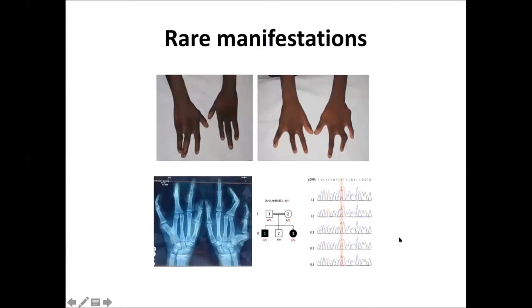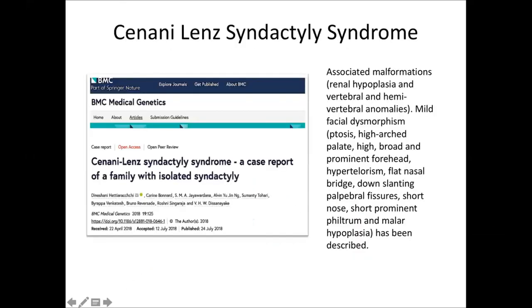Moving on to rare manifestations: this is one of our case reports showing a child with only four fingers, a very rare presentation. It was diagnosed using whole exome sequencing, identifying a mutation in a consanguineous family. The parents were heterozygous carriers. The mutation and clinical phenotype were both novel, demonstrating that genetic testing allows us not only to diagnose but also to identify and report new findings.